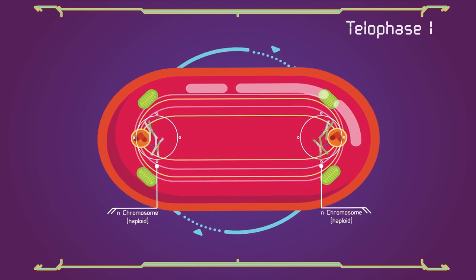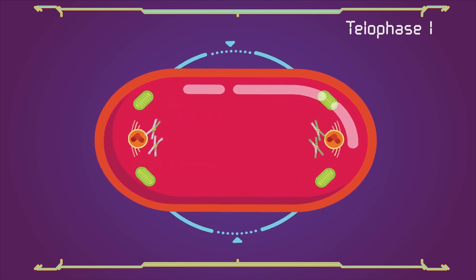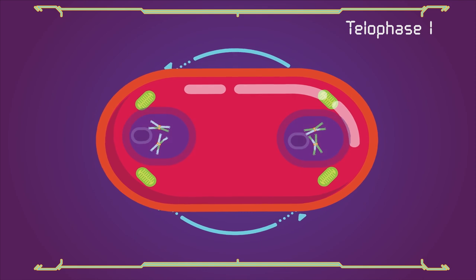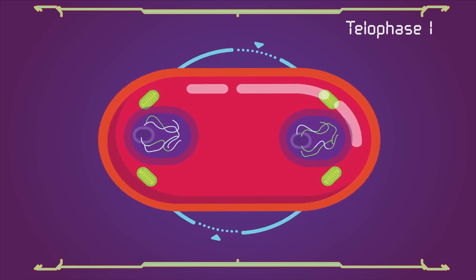But each chromosome consists of a pair of chromatids. The microtubules that make up the spindle network disappear, and a new nuclear membrane surrounds each haploid set. The chromosomes uncoil back into chromatin.